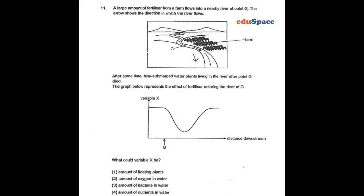In question 11, we have a large amount of fertilizer from a farm flowing into a nearby river. After some time, fully submerged water plants living in the river after point G died.